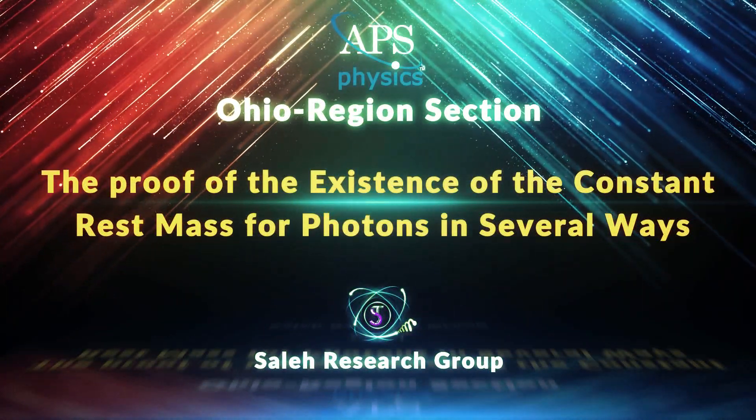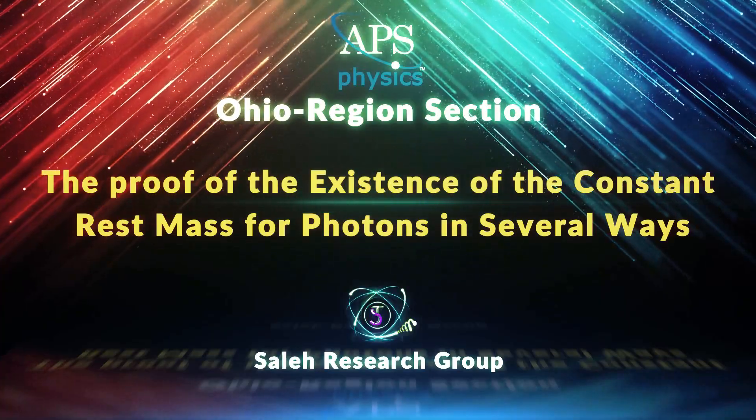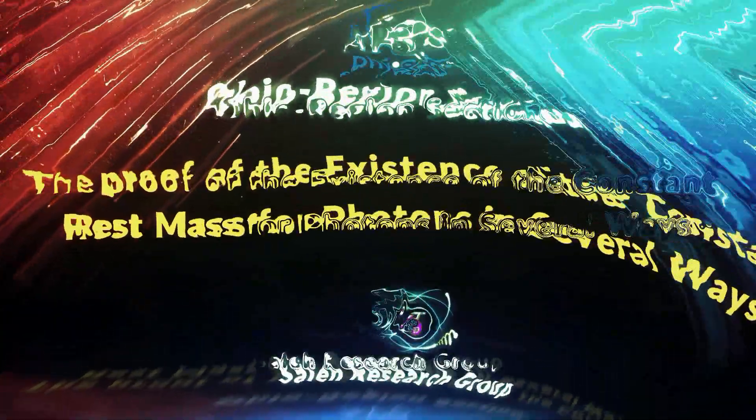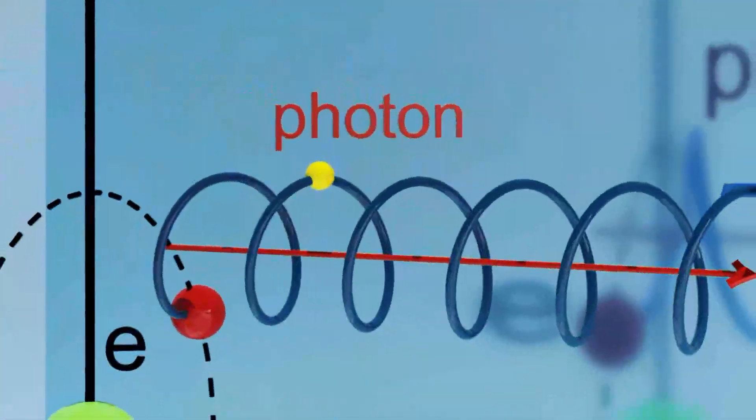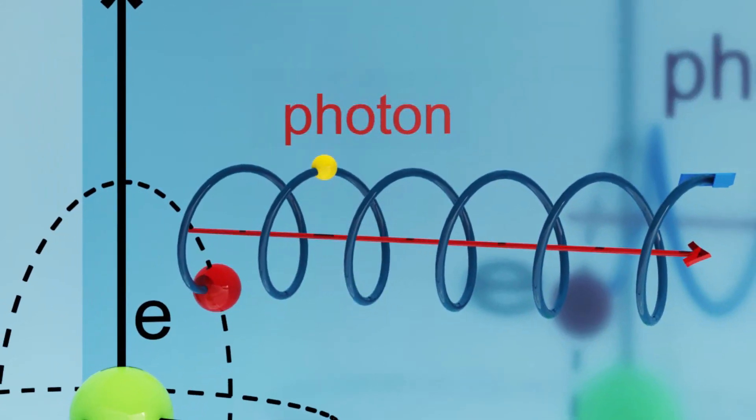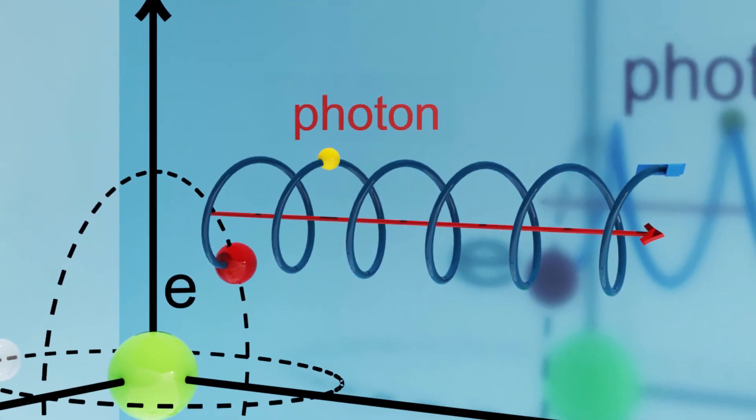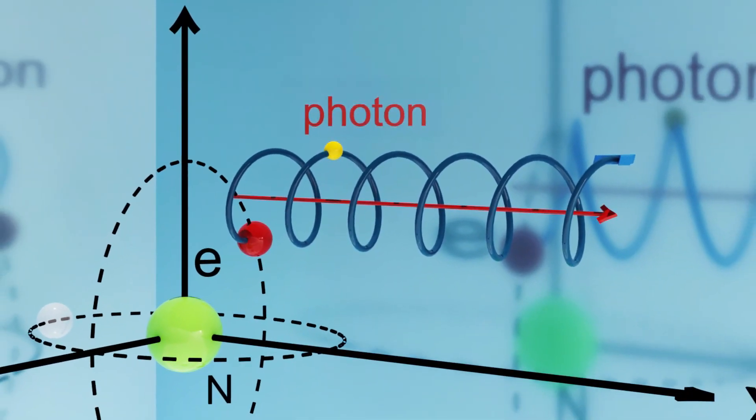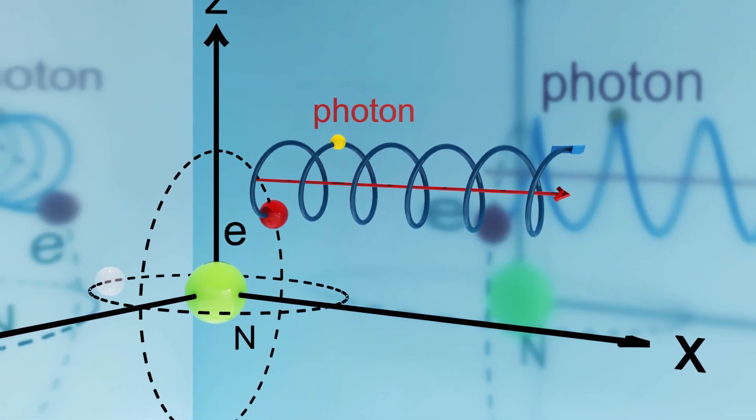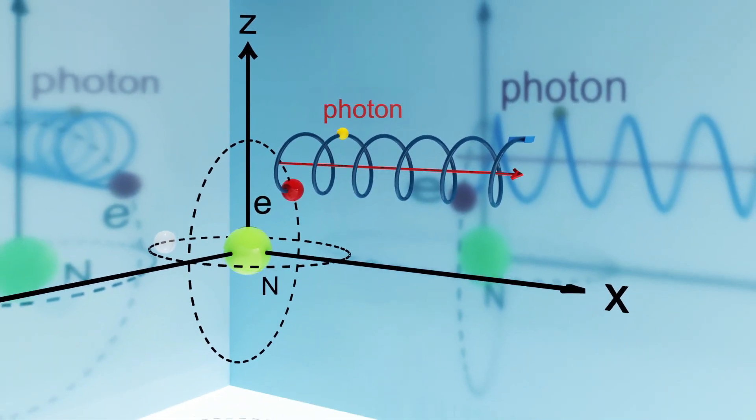The Proof of the Existence of the Constant Rest Mass for Photons in Several Waves. Saleh theory defines a photon as a small particle with constant rest mass which moves in three dimensions, not two, and has a helical motion.